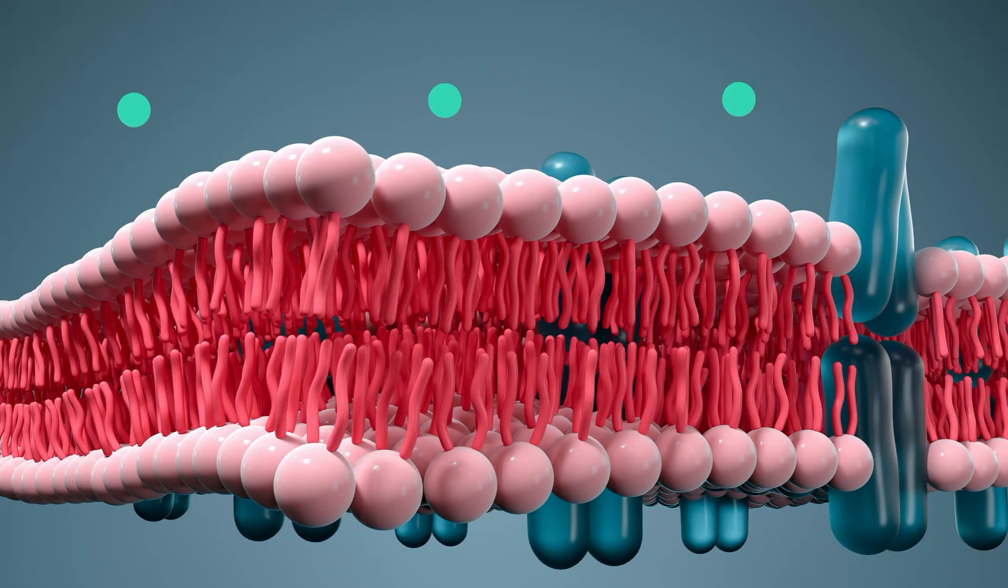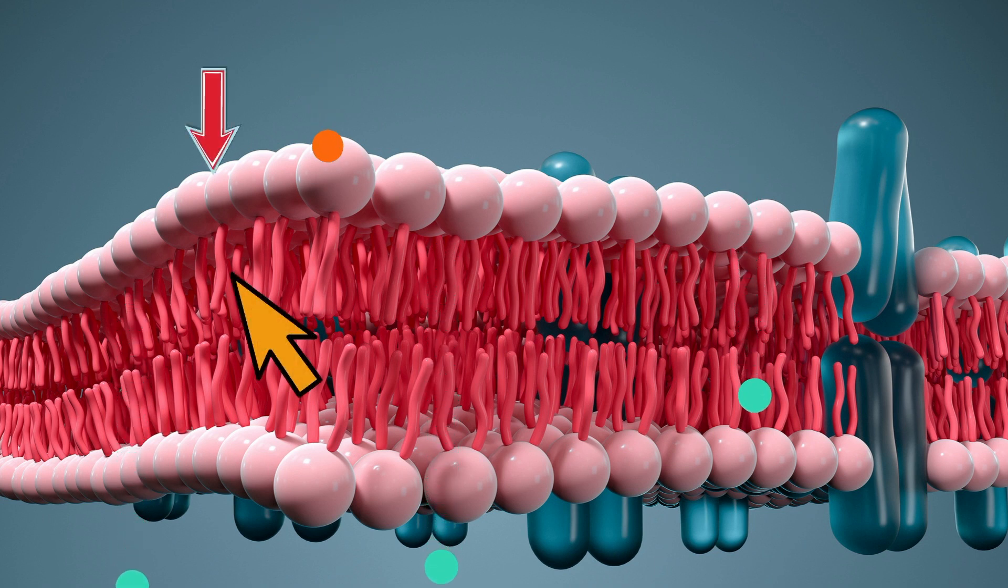Some objects can easily pass through the cell membrane, which is a phospholipid bilayer. It is composed of two layers—remember bi means two—and the phospholipids have a polar head and a non-polar tail.